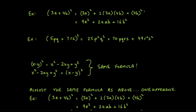(3a)² means 3 squared times a squared, so 9a². For the middle term: 2 times 3 is 6, times 4 is 24, so 24ab. Then (4b)²: 4 squared is 16, b squared is b², giving 16b². The full answer is 9a² + 24ab + 16b².